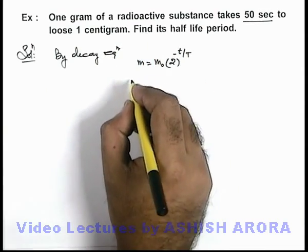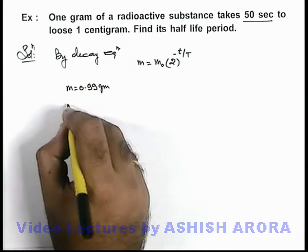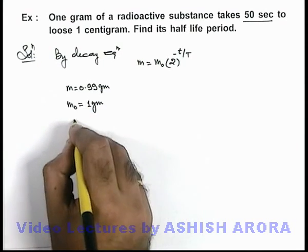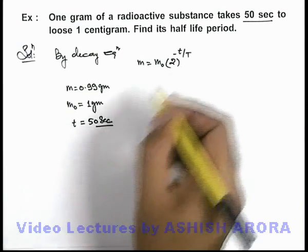So here we can write m = 0.99 grams, m₀ the initial mass was 1 gram, and the time it took was 50 seconds. We are required to find the value of half-life.